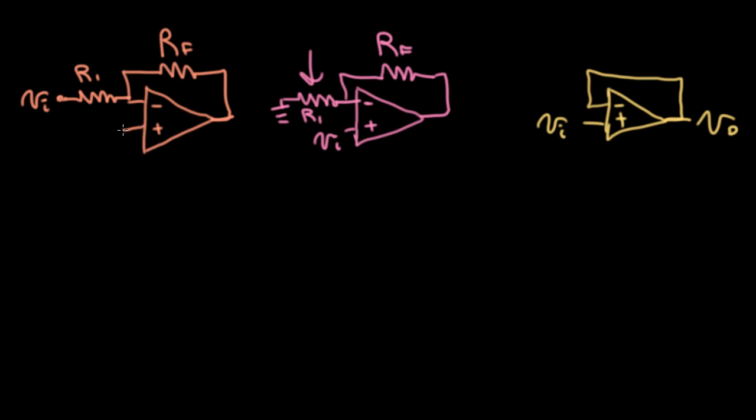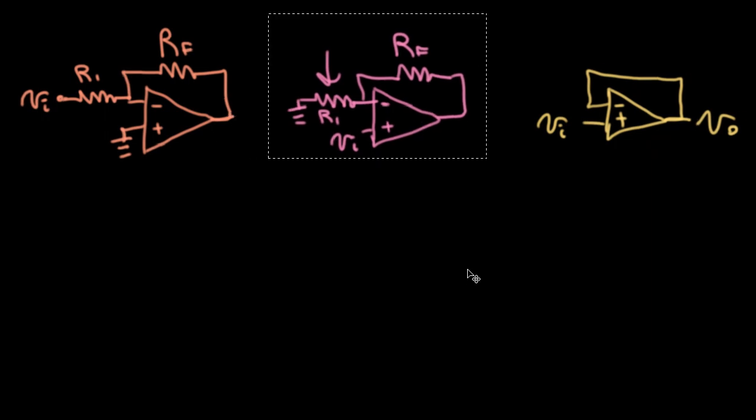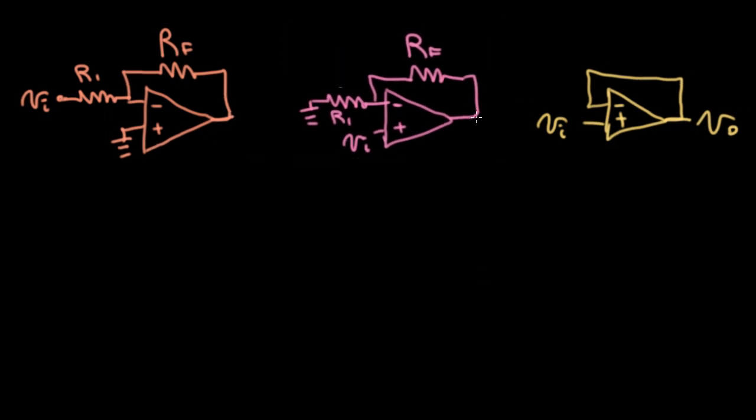Now, in the case of this first circuit, this guy will be grounded at the positive input. So let's scoosh this over. Let me draw in the output here we have VO and VO.